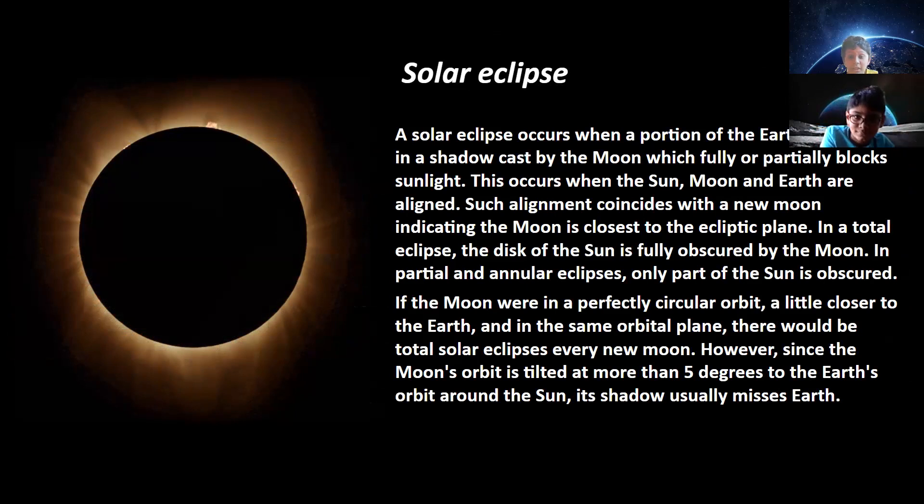In a total eclipse, the disk of the sun is fully obscured by the moon. In partial or annular eclipses, only part of the sun is obscured.